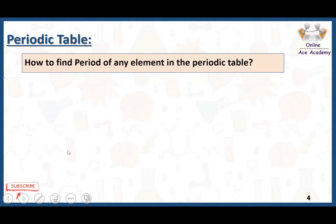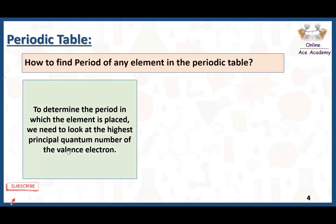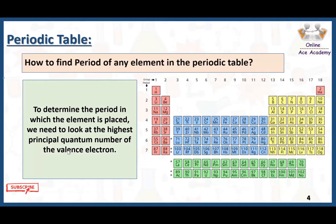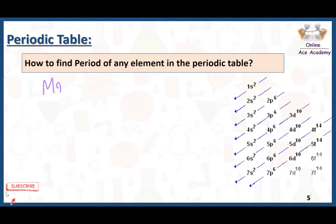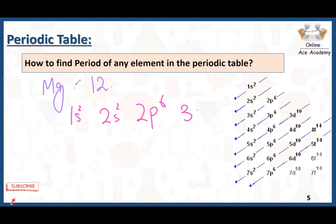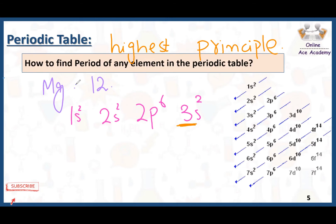How to find the period of any element in the periodic table? To determine the period in which the element is placed, we need to look at the highest principal quantum number. For example, we have magnesium with atomic number 12. Its electronic configuration is 1s2, 2s2, 2p6, and 3s2. The highest principal quantum number is 3, so magnesium belongs to period number 3.